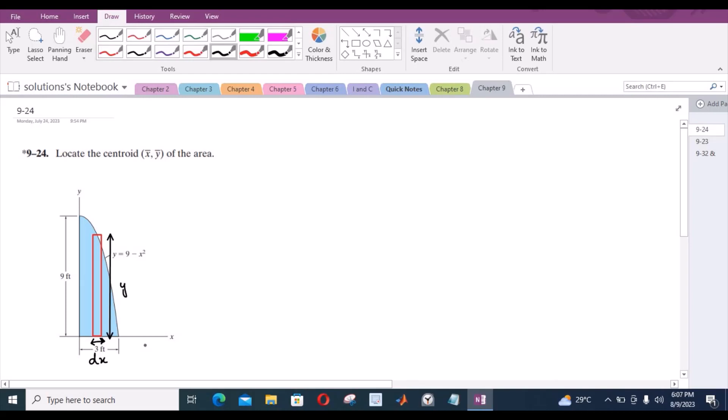Now let us mark the point of intersection between the curve and our rectangular strip, which means this point. Let us call this point x and bar. We know that the formula for finding the centroid of the area: x bar equals integration of x coordinate of centroid of our rectangular strip into the differential area. And for y bar, we have integration of y coordinate of centroid of our rectangular strip into the differential area divided by integration of differential area.